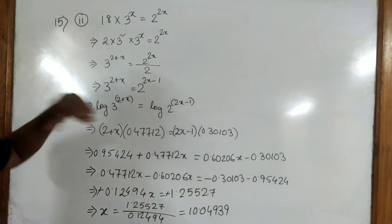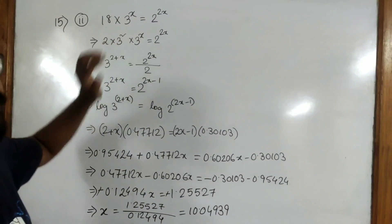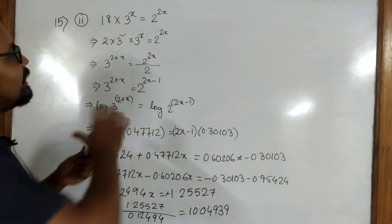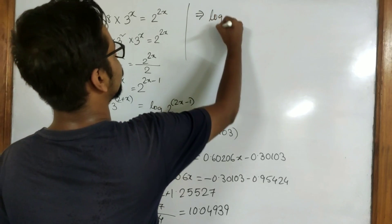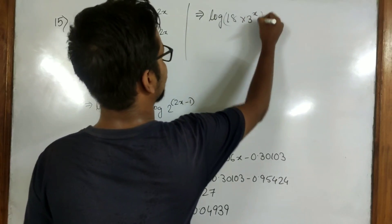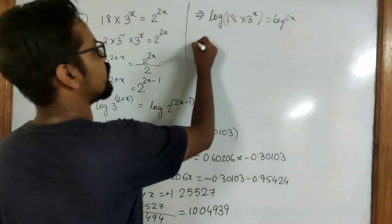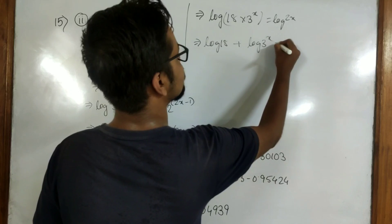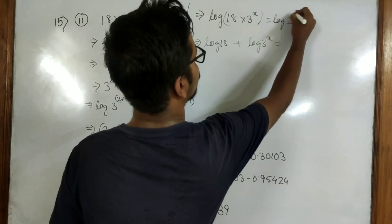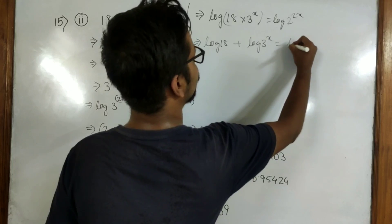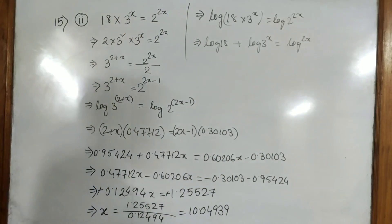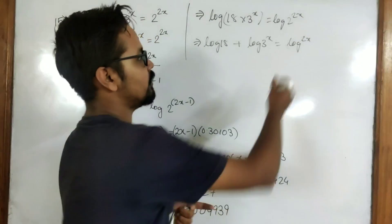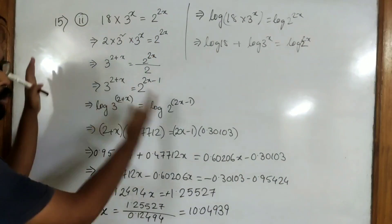These things are really easy. If you do not want to do this calculation, you can directly take log here. So if you take log directly, you get log of 18 into 3 to the power x equal to log of 2 to the power x. Here you find the value of log 18 plus log 3 to the power x, and on the other side log 2 to the power 2x. You can follow this method, put the values, and find the value of x.